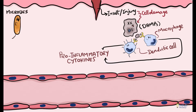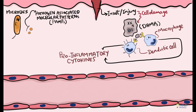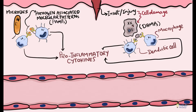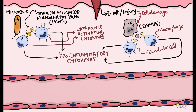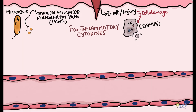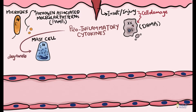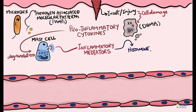Similarly, microbes have specific molecules called pathogen-associated molecular patterns which can be recognized by receptors on leukocytes. On recognition, leukocytes release pro-inflammatory cytokines and other cytokines that help lymphocyte activation. Pro-inflammatory cytokines cause degranulation of nearby mast cells, releasing inflammatory mediators like histamine, eicosanoids like prostaglandins and leukotrienes, and even more pro-inflammatory cytokines, kick-starting an acute inflammatory response.